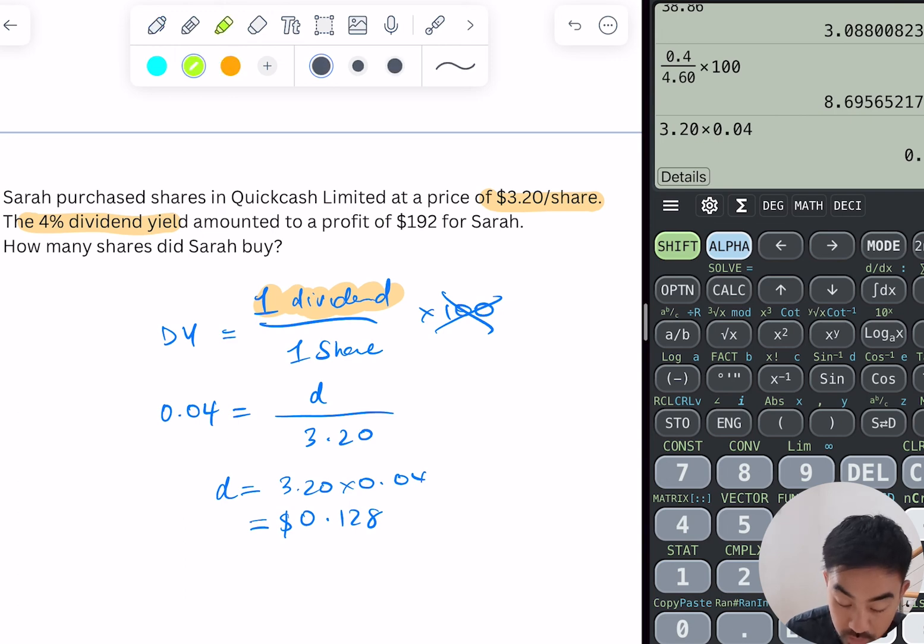So in other words, this is what one dividend is. Okay, one dividend is 0.128 dollars. So if the dividend amounted to $192, all I need to do is go 192 divided by what one dividend is. Okay, so the shares she owns will be 192 divided by 0.128.